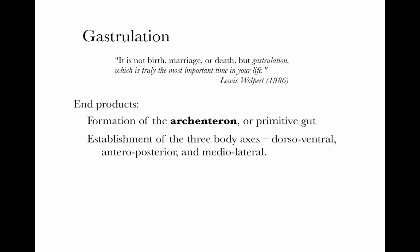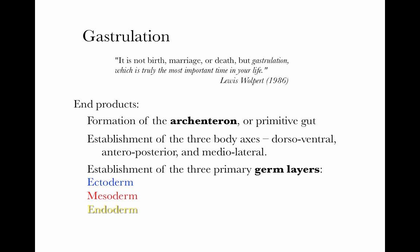Second, it's during gastrulation that the major axes of the body are established — the dorsal-ventral axis, the anteroposterior axis going from head to tail, and the medial-lateral axis. And finally, it results in the establishment of the three primary germ layers: the ectoderm, mesoderm, and endoderm.